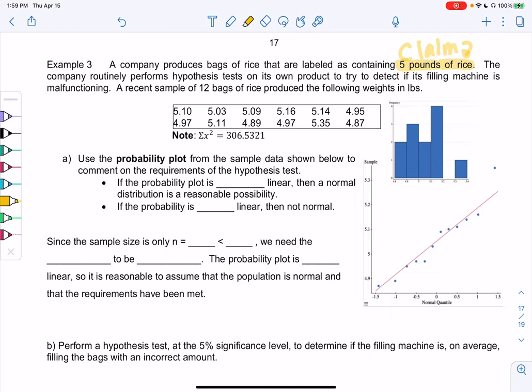A recent sample of 12 bags produced the following results. So every bag is going to be a little bit different. We've talked about sampling error. It's not possible for them all to be exactly five, but they should all be very close. And so here's our sample.